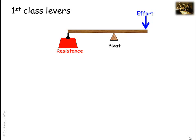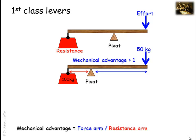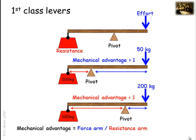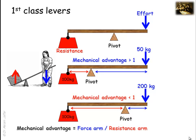In first-class levers, the pivot or fulcrum is located between the effort and resistance. Its mechanical advantage can be greater or less than one. The mechanical advantage is more than one where the pivot is at a short distance from the resistance, making the resistance arm shorter than the effort arm. However, the mechanical advantage can be less than one, as in a lever where the resistance arm is longer than the effort arm or the force arm.